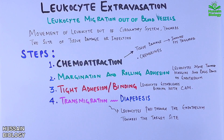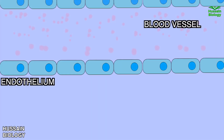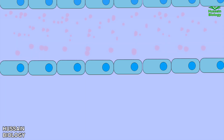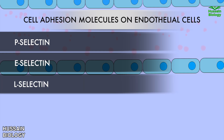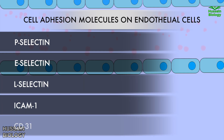Now let's see this mechanism in detail. First we can see the blood vessel and the endothelial cells that form the endothelium membrane — this is the barrier which leukocytes have to pass. On these endothelial cells we have different types of cell adhesion molecules, such as P-selectin, E-selectin, L-selectin, ICAM-1, CD31, and many more molecules.